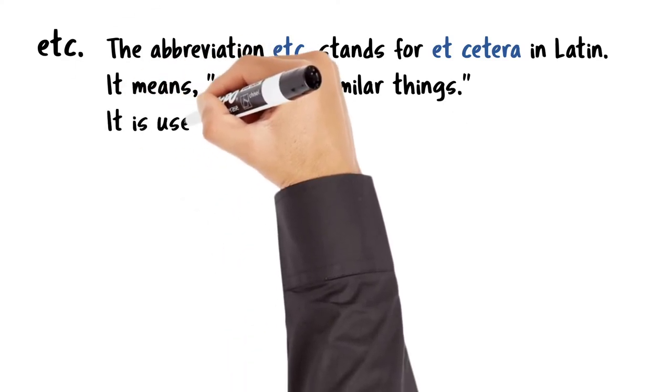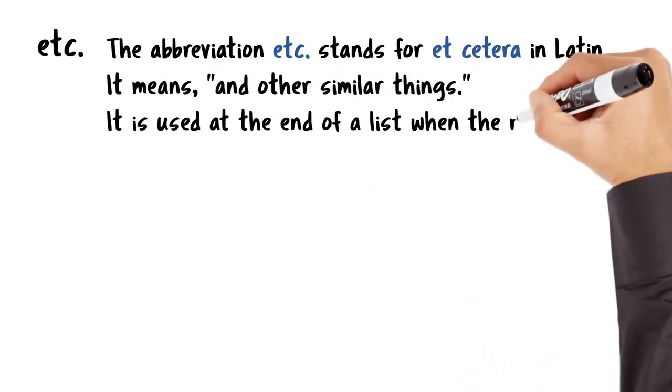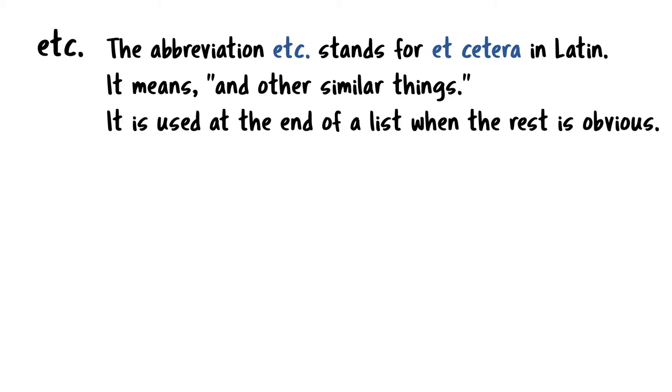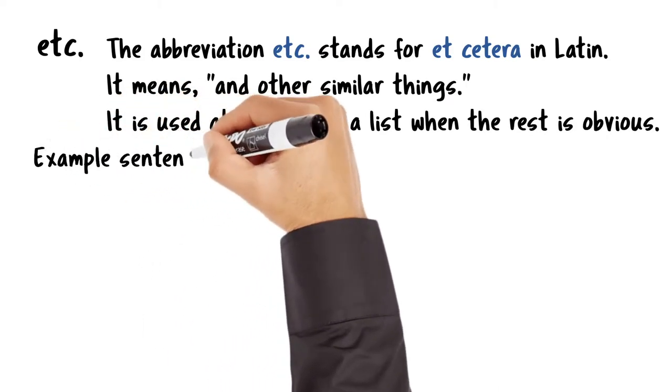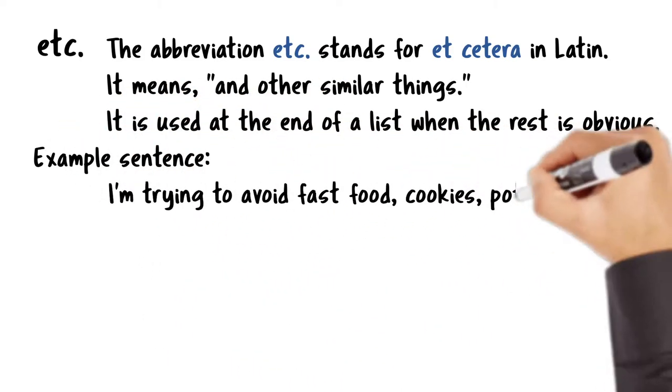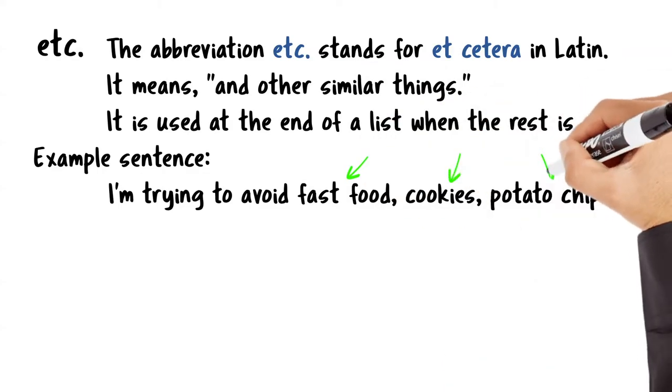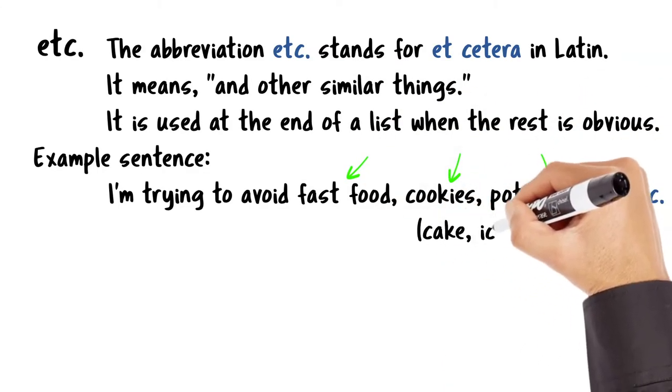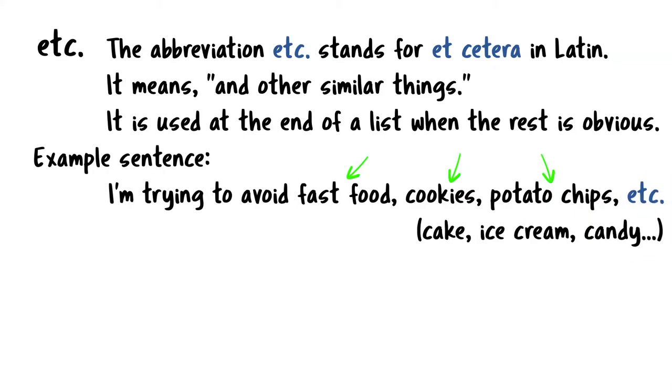This abbreviation is used at the end of a list of examples, when it is clear what the rest of the list will be. This is similar to the phrase, and so on. In this sentence, you can see three examples of junk food. You don't need to see any more examples, because you should be able to continue the list yourself.